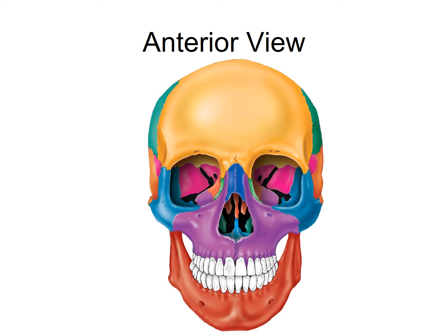Let's look at the nasal cavity. Here we have an extension from the ethmoid bone called the perpendicular plate, and inferior to it we have the vomer, which means plow because it looks sort of like a plow from a lateral view. The perpendicular plate is a bone feature — an extension of the ethmoid bone we saw in the floor of the skull. The vomer is its own bone.